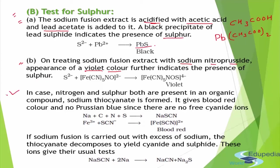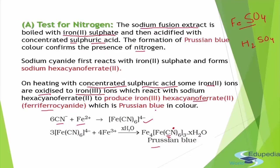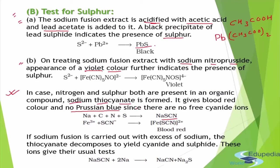We must take a precaution: if both nitrogen and sulfur are present in the organic compound, we are going to get sodium thiocyanate instead of sodium cyanide or sodium sulfide. Since free cyanide ions are not present, it will not give the Prussian blue color. So if nitrogen is present but Prussian blue is not obtained, we must check - if a blood red color appears due to the thiocyanate ion, we need to run further tests before ruling out nitrogen.